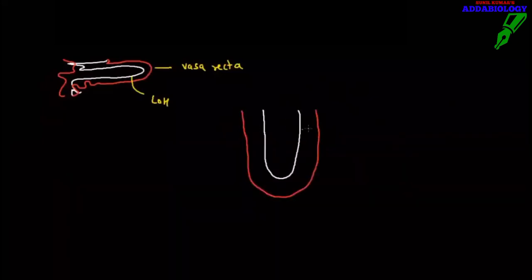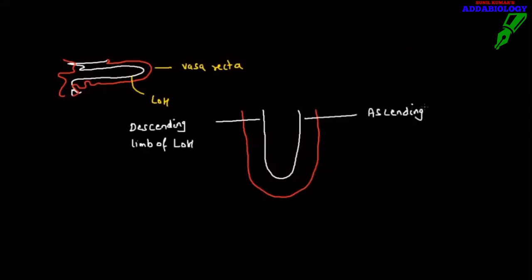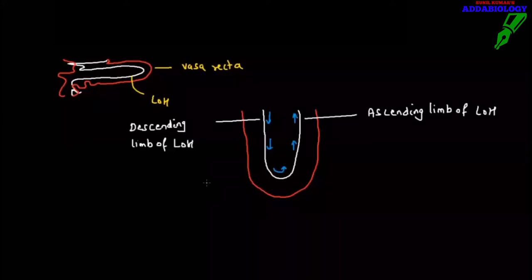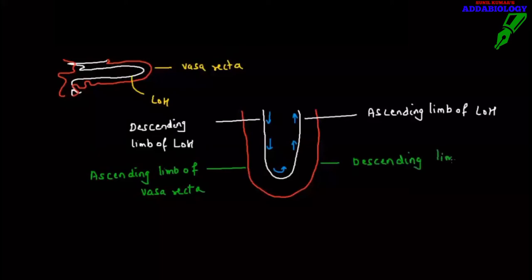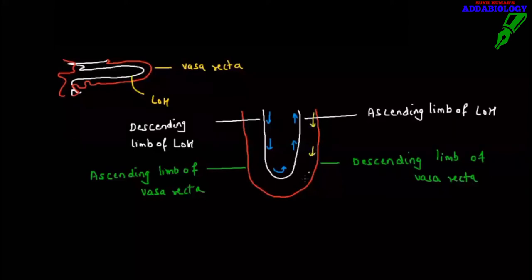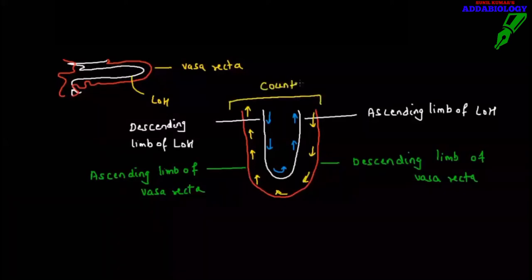The peritubular capillary surrounding the loop of Henle is called the vasa recta. This red colored one is the vasa recta. The descending limb of the loop of Henle is permeable to water but impermeable to salt; the ascending limb of the loop of Henle is permeable to salt and impermeable to water. The flow of the filtrate is from descending to ascending limb. When I look at the vasa recta, one side is the ascending limb and the other is the descending limb — the flow of fluid in the vasa recta is opposite in direction to that of the loop of Henle. This is where counter current comes into picture.